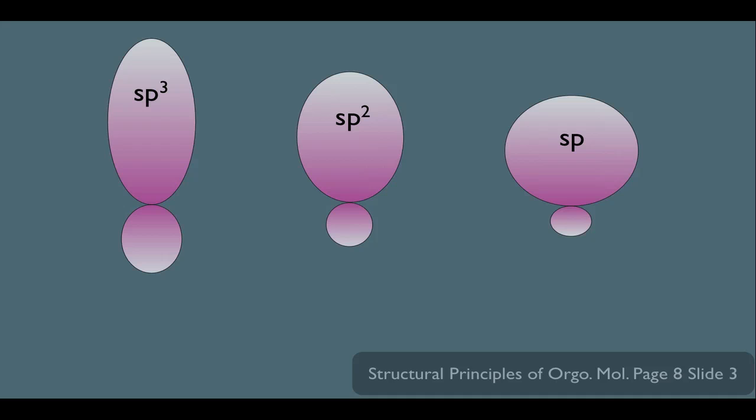Why is this so? Well remember, the sp3 hybridized orbital is technically 75% p and 25% s. In other words, remember he's one part s and three parts p. Since he has more p than s character, he takes on the shape more like a p orbital than he does a spherical s orbital.